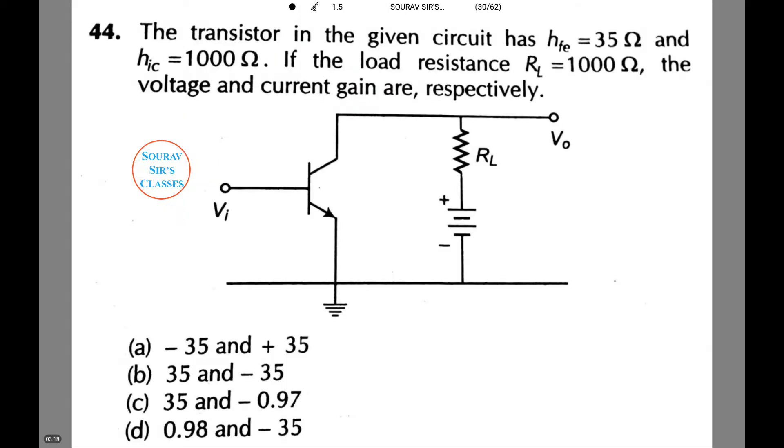Now in the next question, the transistor in the given circuit has HFE equals to 35 and HIC equals to 1000 ohms. If the load resistance RL equals to 1000 ohms, the voltage and current gain are respectively one of the four options. Therefore voltage gain equals minus 35 into 1000 whole divided by 1000, which is equal to minus 35. And current gain equals to minus of voltage gain, which equals to plus 35. Simply the answer is option number A.